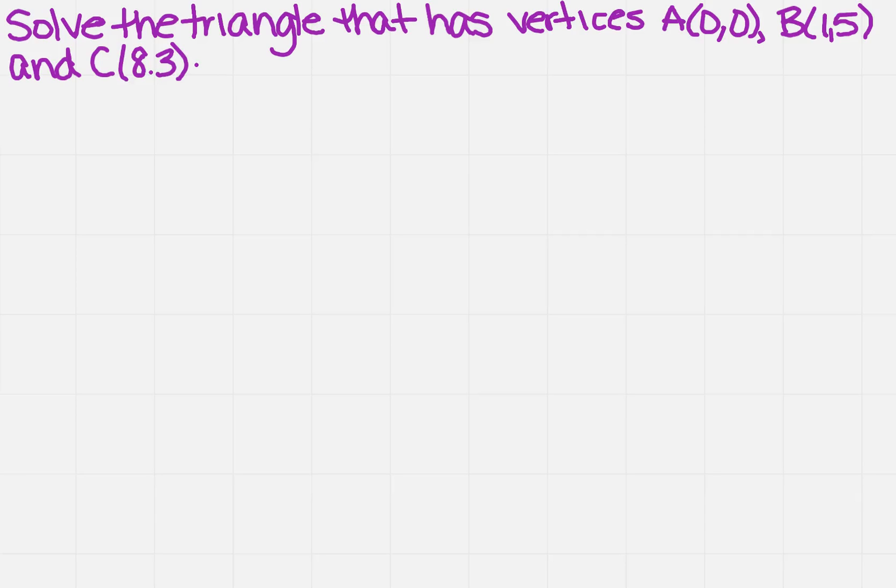Solve the triangle that has vertices A at 0, 0, B at 1, 5, and C at 8, 3. That should be a comma, sorry about that.